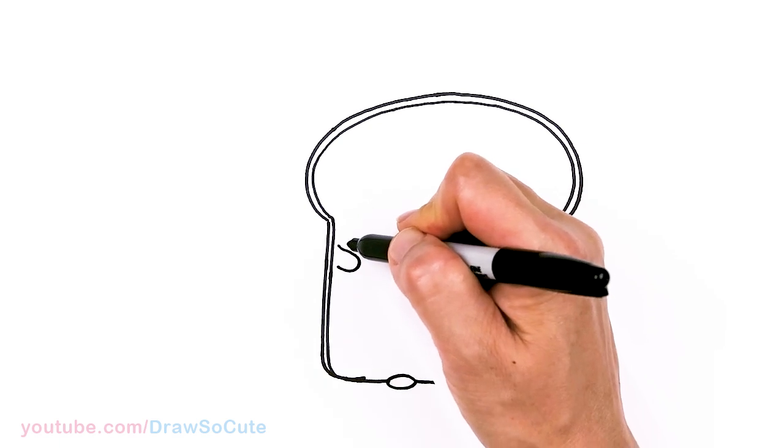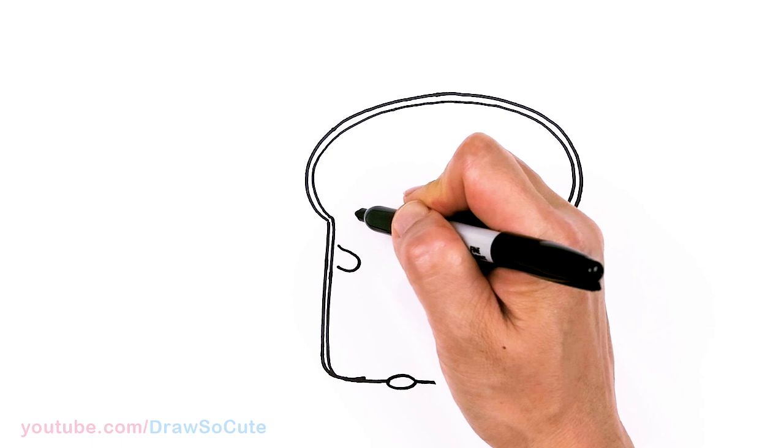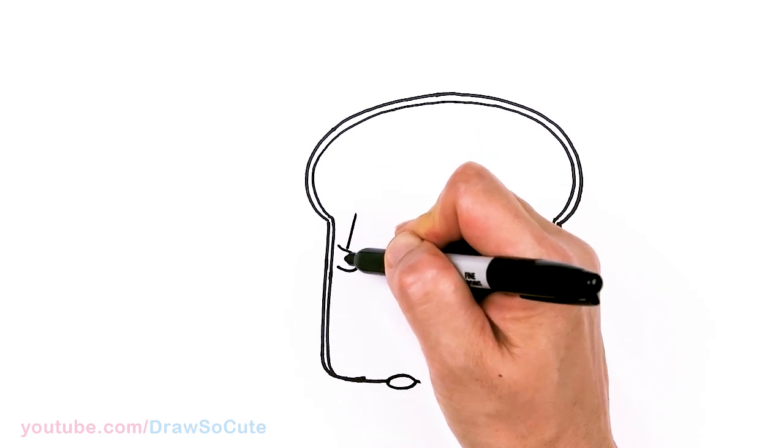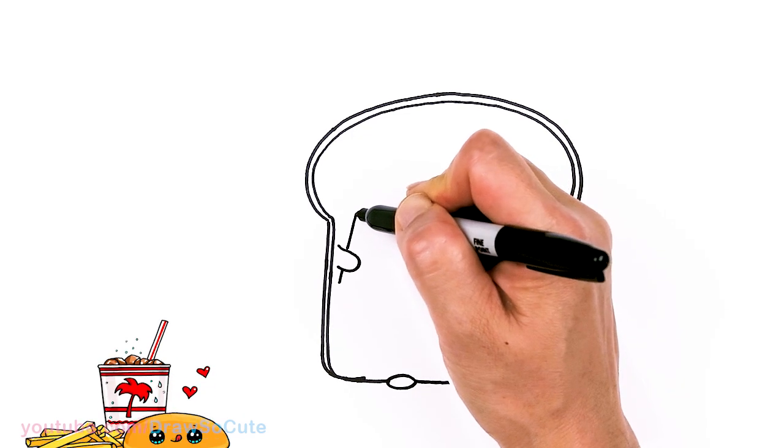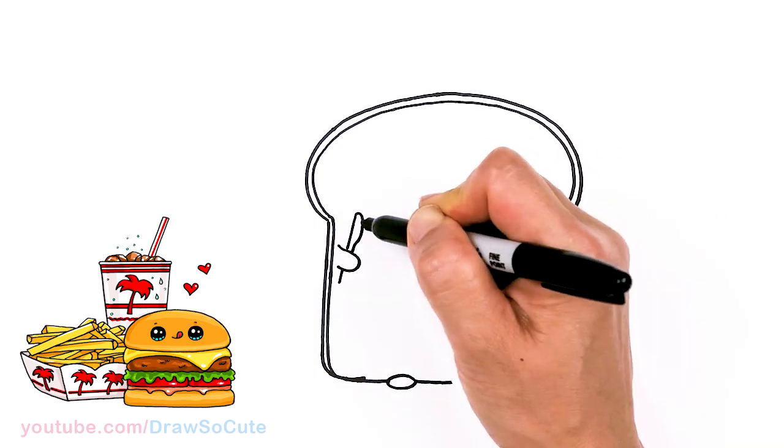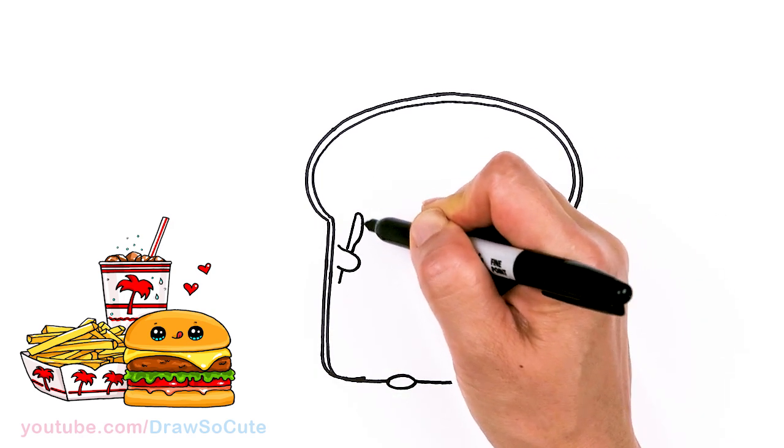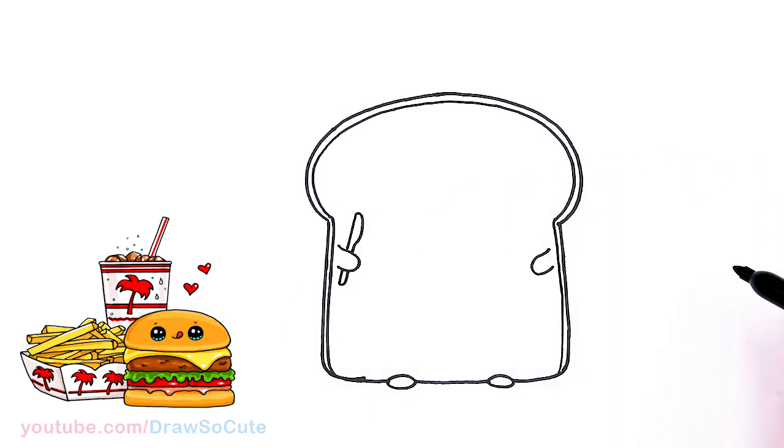From there I'm going to come in on this hand and draw a butter knife. So let's say about right here I'm going to draw an angle line that comes through and right here I'm going to round it off and then come in. So we just want more of this part right here to be thicker. Come through and connect for our butter knife.